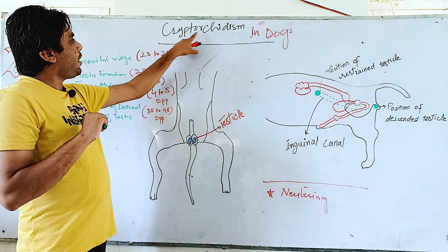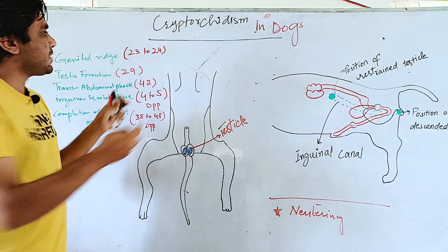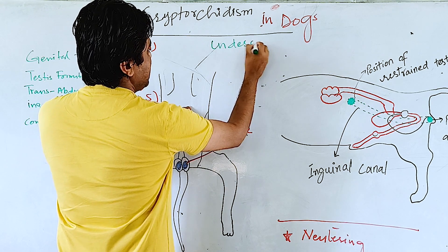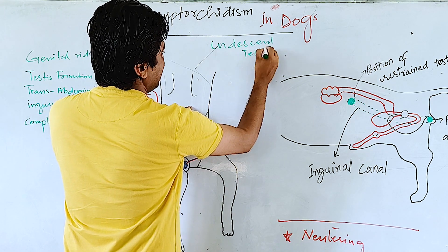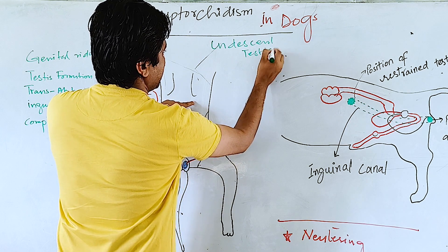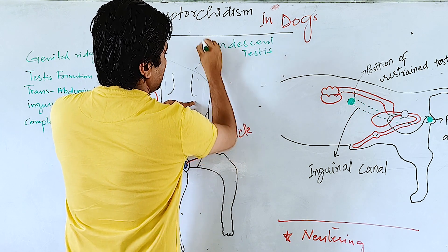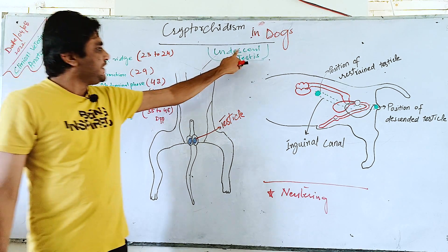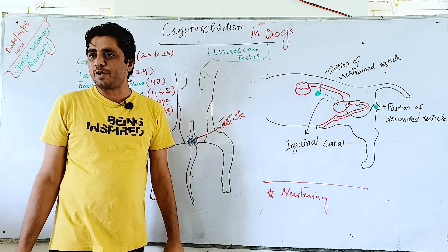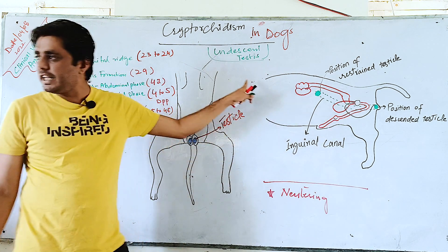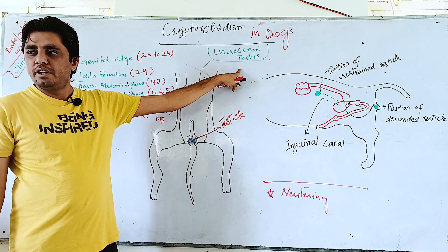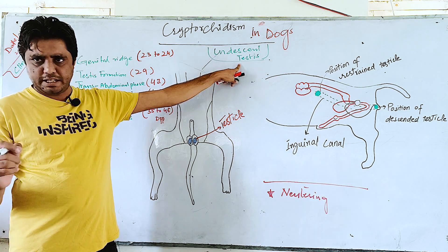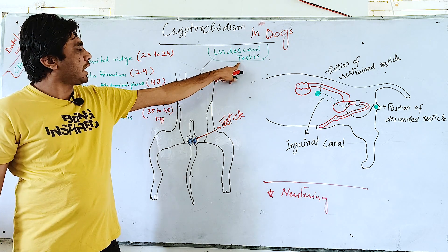Cryptorchidism can be called undescended testis. Something is related to the descent of the testis. First you must understand what the descent of the testis is, and then you can understand what cryptorchidism in dogs is.